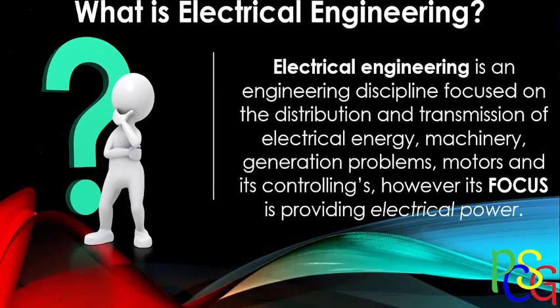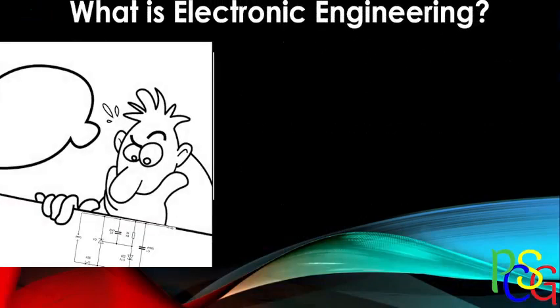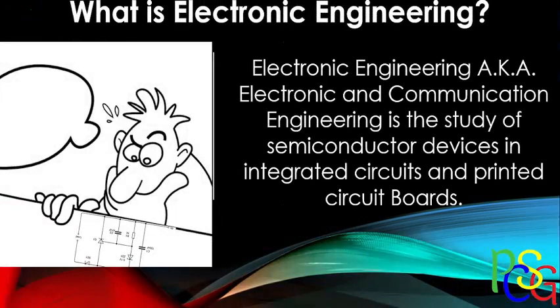Now that we have a basic understanding of what electrical engineering is, we're going to go on to electronic engineering. These two things sound the same but they are different disciplines, and we'll go through how they're different shortly. So what is electronic engineering? Electronic engineering, also known as electronic and computer communication engineering, is the study of semiconductor devices, integrated circuits, and printed circuit boards.